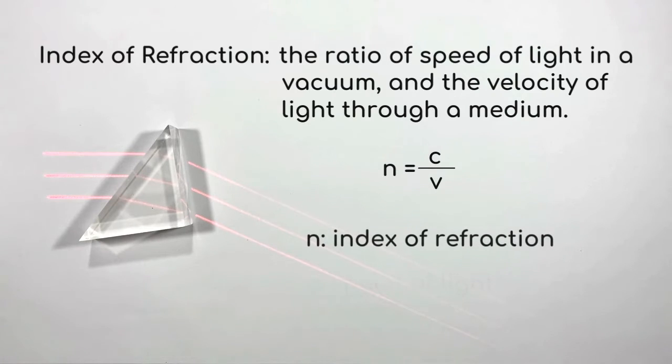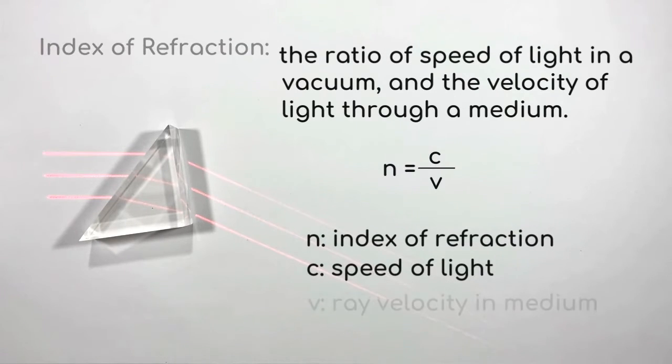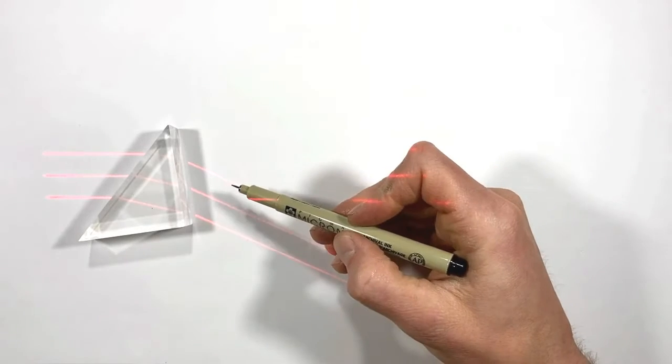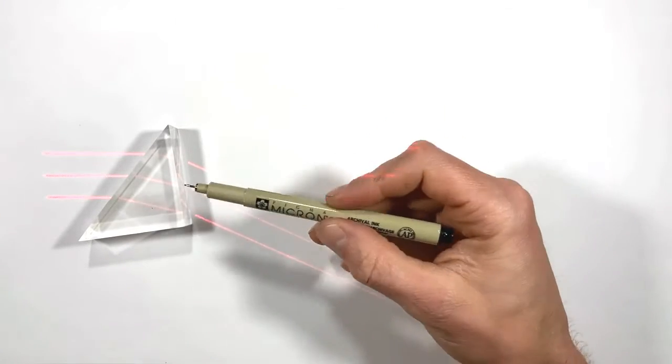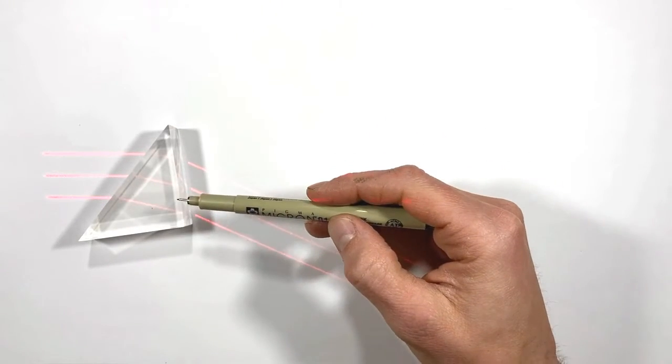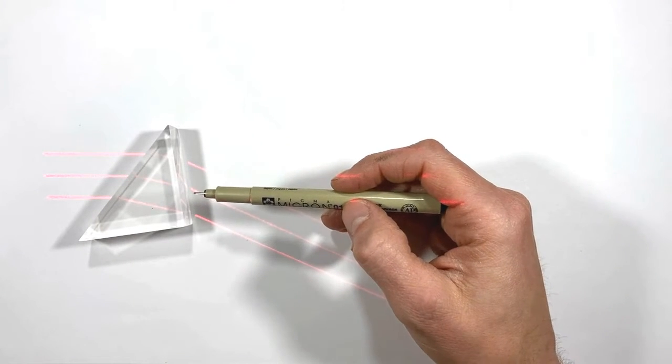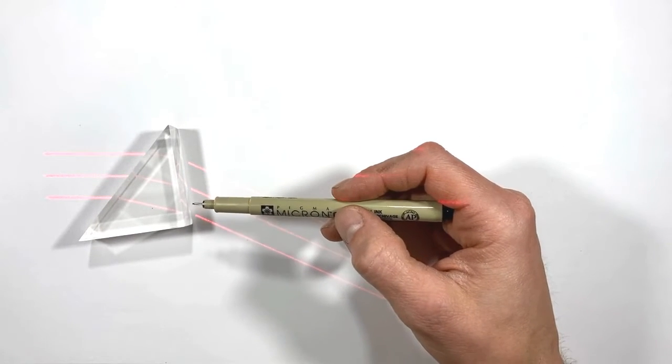Where n is the index of refraction, c is the speed of light, and v is the velocity of light in a particular medium. Now the internet is full of people trying to explain why light slows down in certain mediums, and they're usually wrong. Suffice to say it's complicated, and for now we'll leave it at that. But back to the matter at hand.